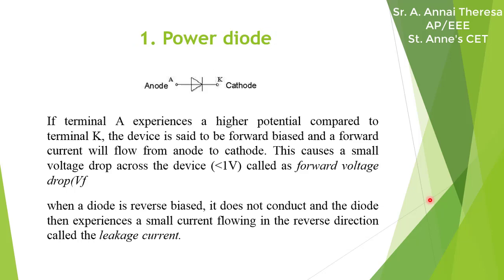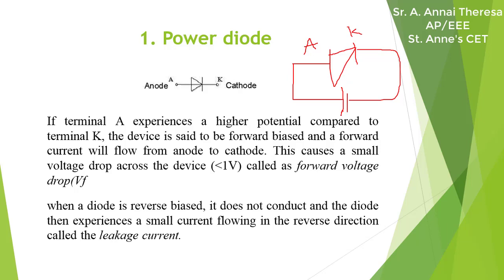The first type is the power diode, which has two terminals: anode and cathode. When the positive terminal of a battery is connected to the anode and the negative terminal to the cathode, it is in the forward biased condition. In this forward biased condition, there will be a small voltage drop across the device, called the forward voltage drop.